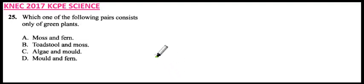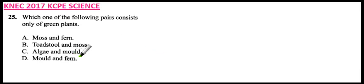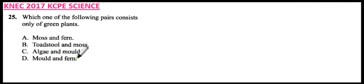Number 25. Which one of the following pairs consists only of green plants? We have A, moss and fern. B, toadstool and moss. C, algae and mold. And D, mold and fern.